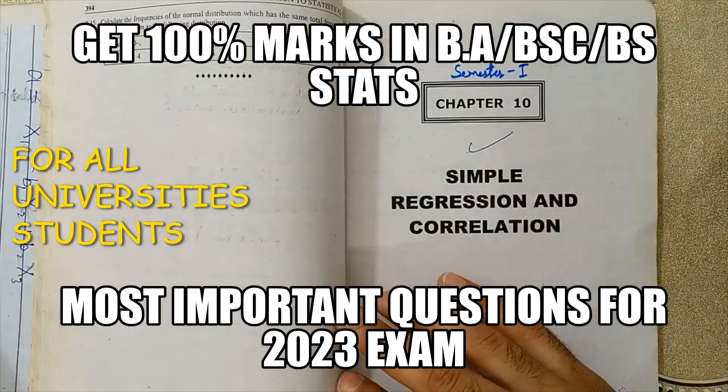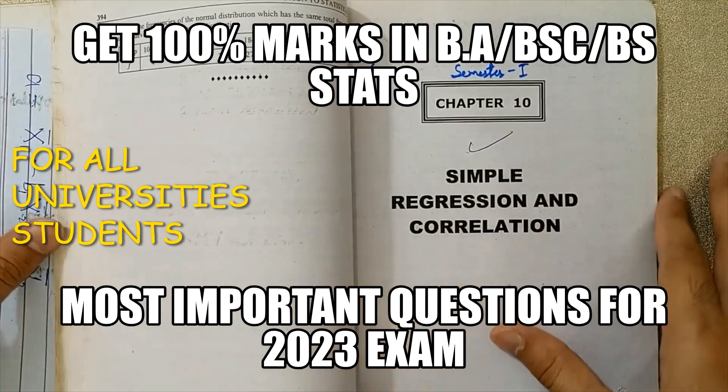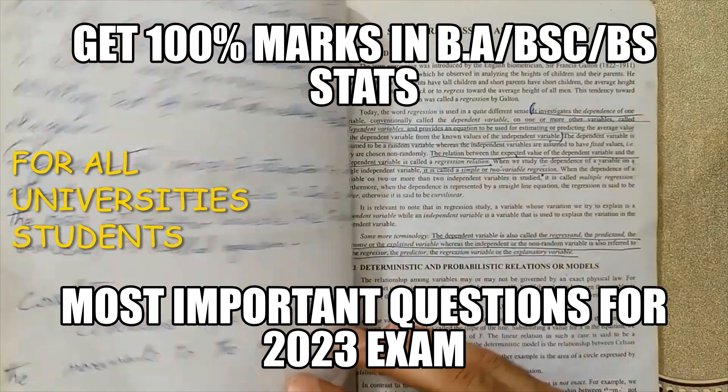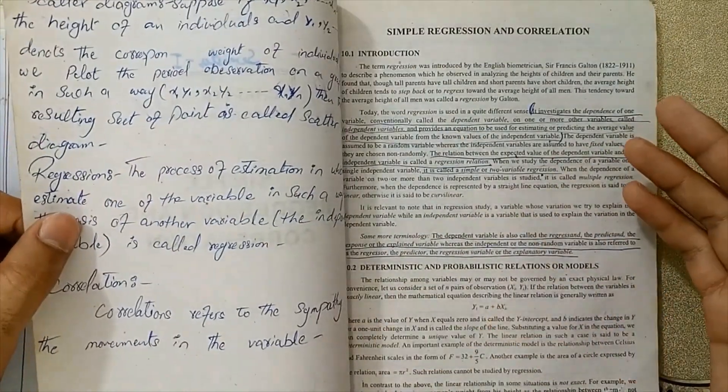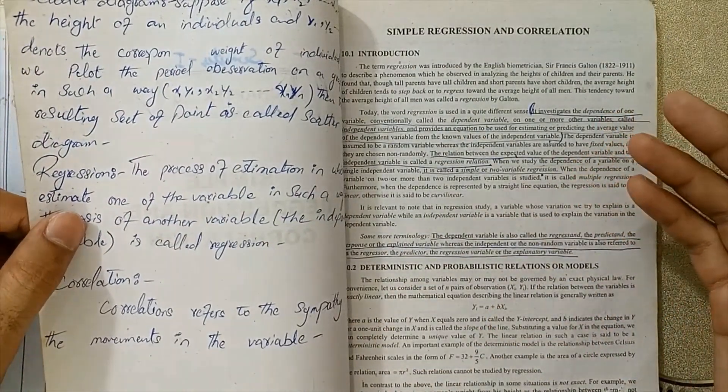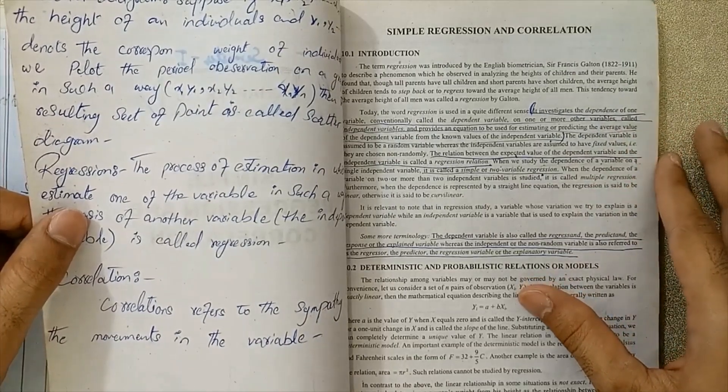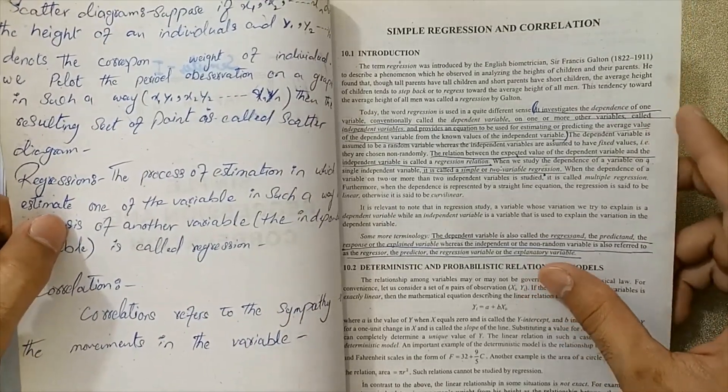Chapter: Simple Regression and Correlation. This chapter is very important for you. First, what is regression? What is simple regression? What is correlation? What is negative correlation, positive correlation?